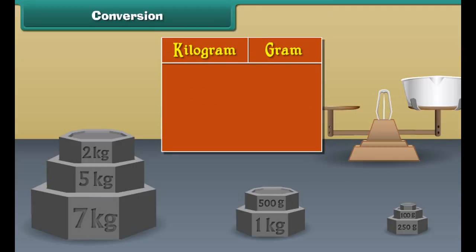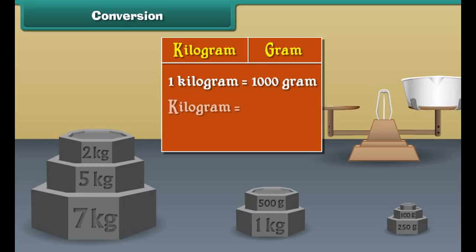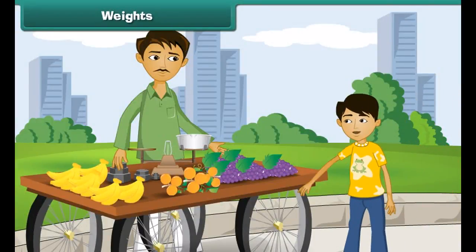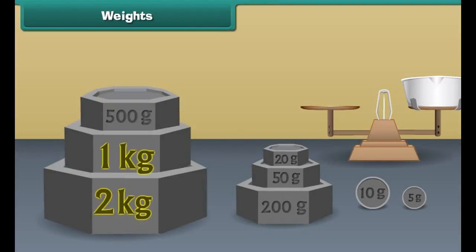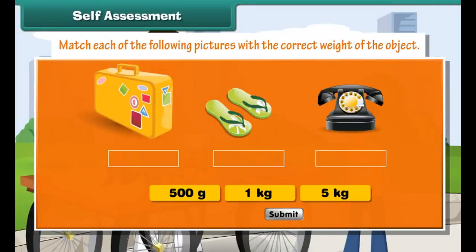The weight of different objects can be measured and compared. Two children measure their weight: the first child weighs 25 kilograms and the second child weighs 22 kilograms, so the first child is heavier. The words kilogram and gram are used to express weight. One kilogram is equal to 1000 grams. Kilogram is also represented as kg, and gram is also represented as g.